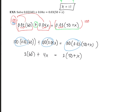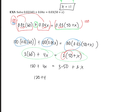Simplify each side: on the left, 2 times 60 gives 120 plus 4x. On the right, distribute the 3: 3 times 50 is 150 plus 3x. So we have 120 plus 4x equals 150 plus 3x.